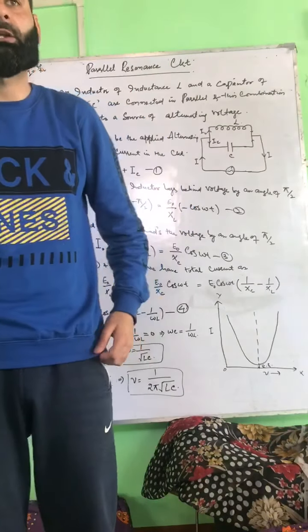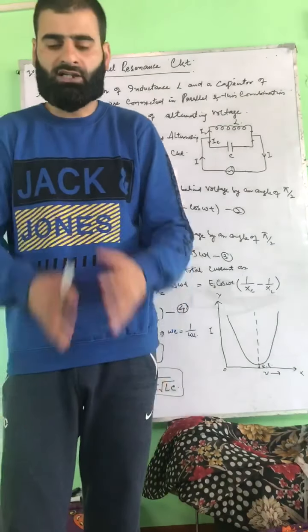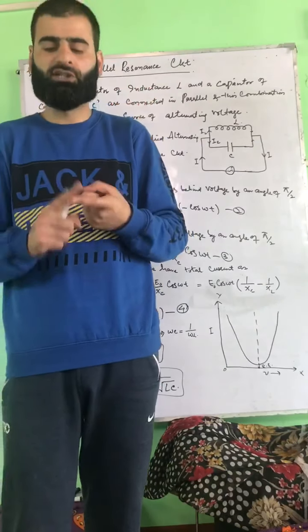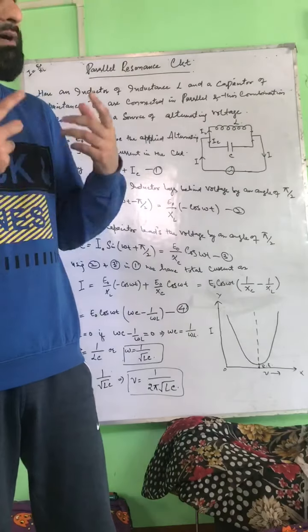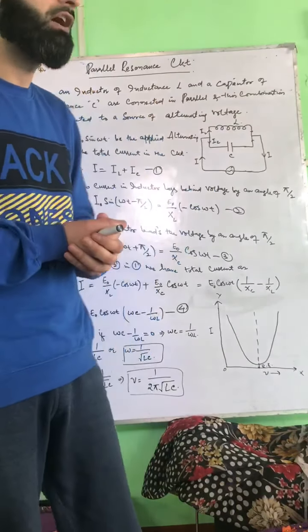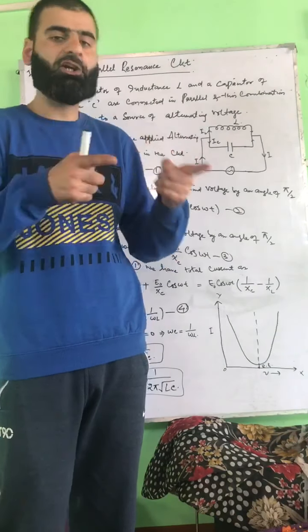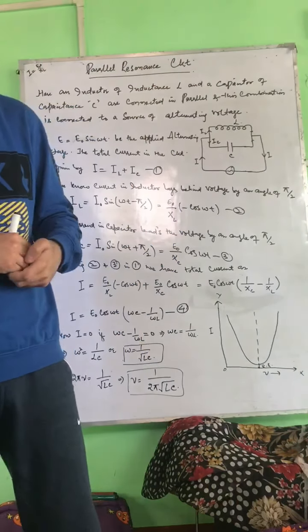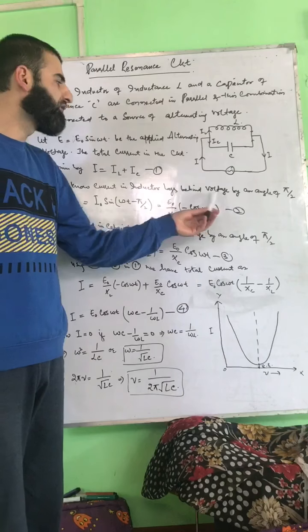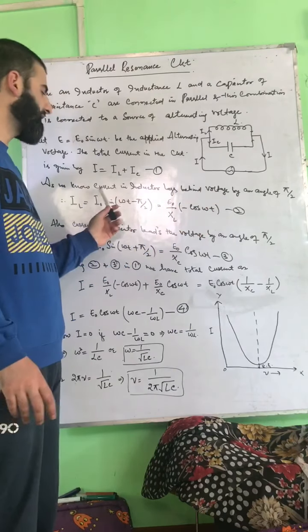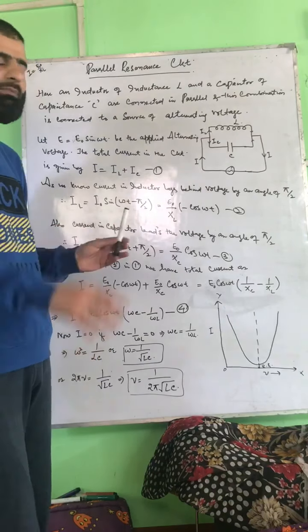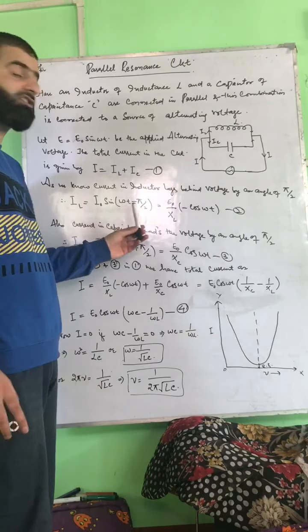In the inductor, the current lags behind the voltage by an angle of π/2. While in a pure capacitive circuit, the current leads the voltage by the same angle π/2. So the inductive current IL is given by IL = I₀ sin(ωt − π/2).